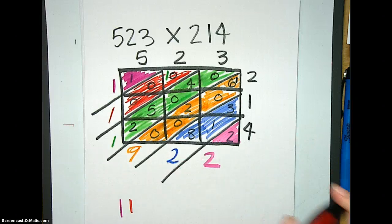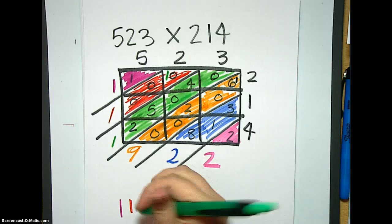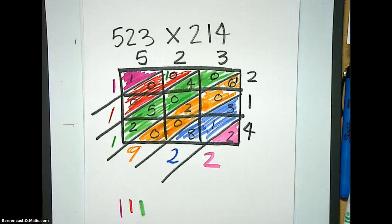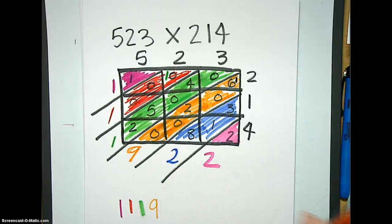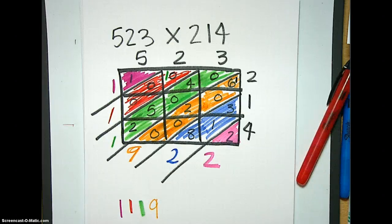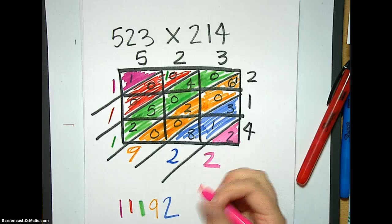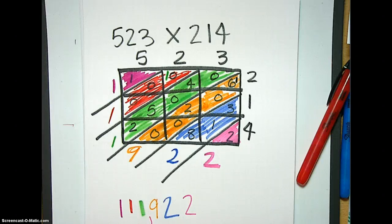So it looks like you have 111,922 is your answer to 523 times 214. I really hope this helps you guys out. I know that I love to do it this way. Good luck.